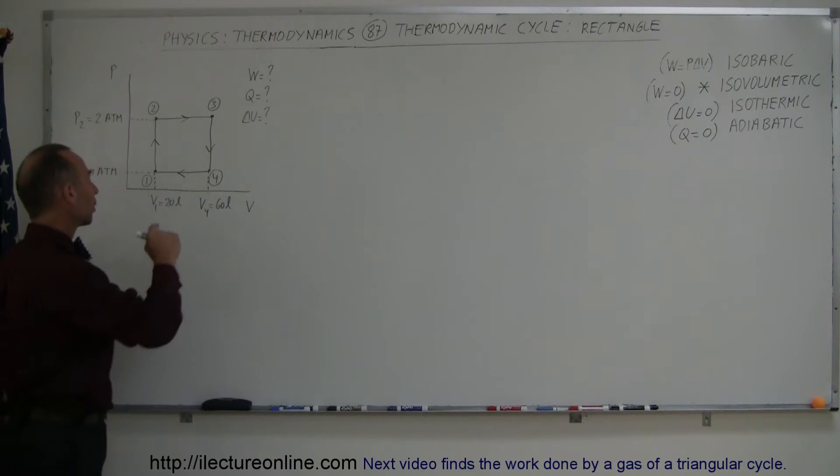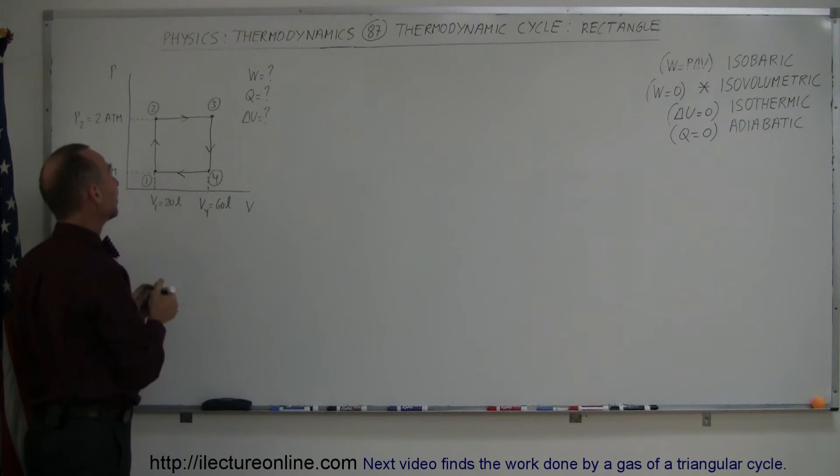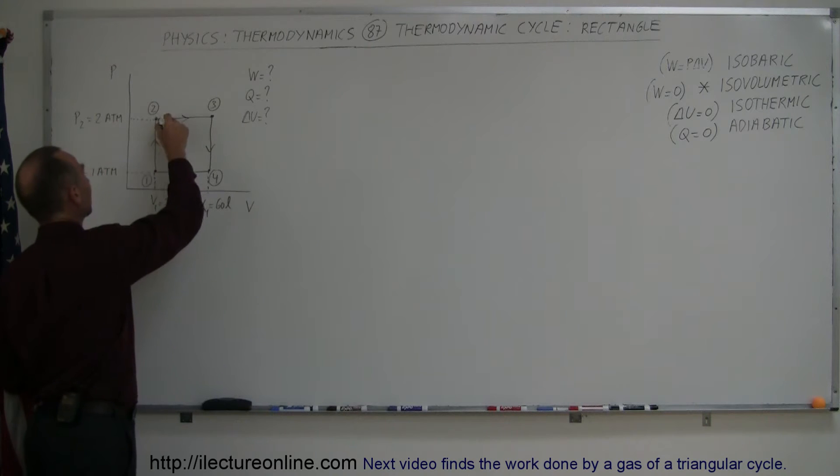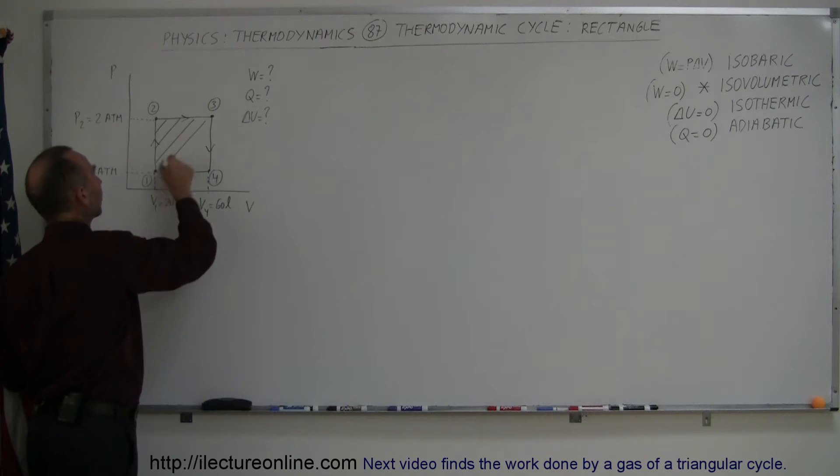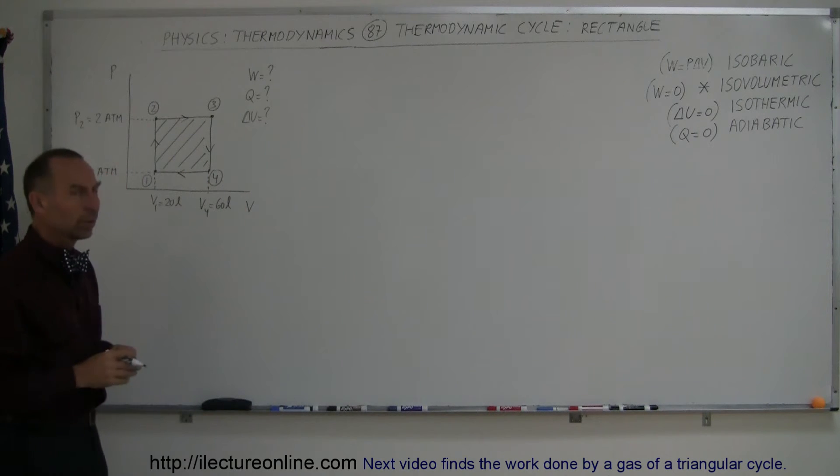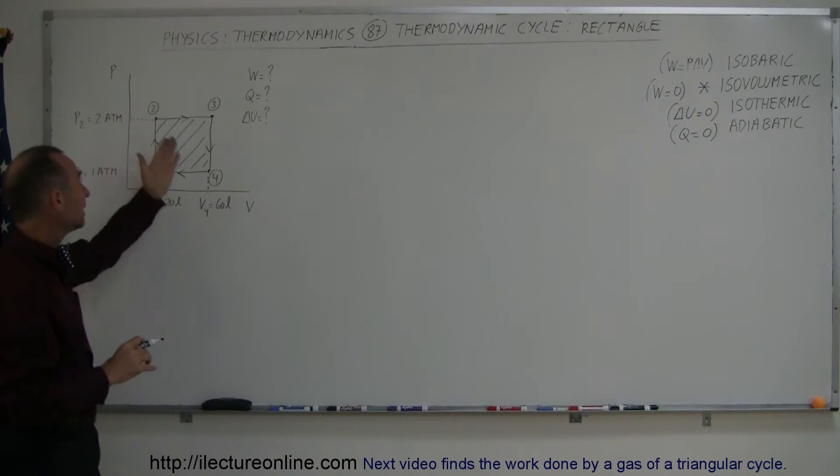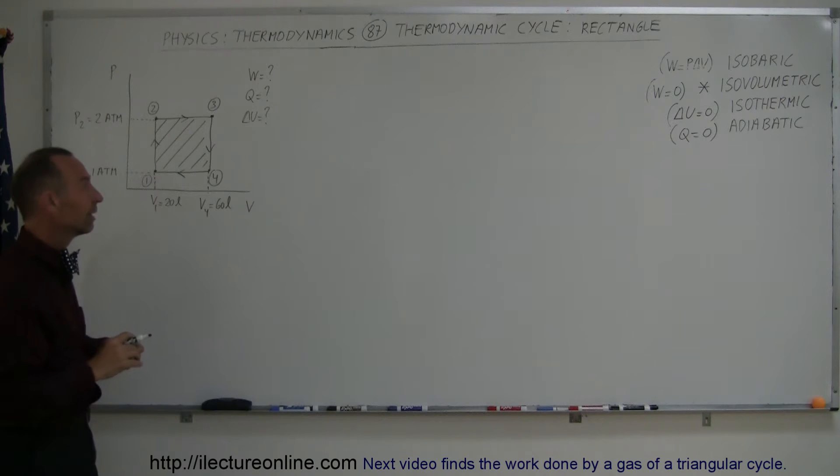And it turns out that the work done in a thermodynamic cycle is simply equal to the area inside this curve. So if we simply calculate the area inside this cycle, then we find the work done. But there's also other ways to find the work done and we'll show you that in just a moment, especially in cases where we don't have any geometric shape of the cycle.